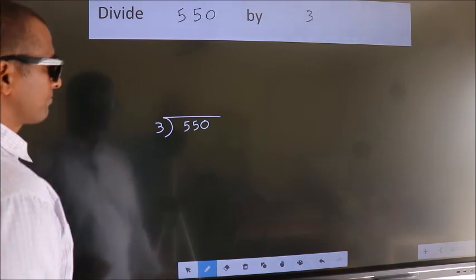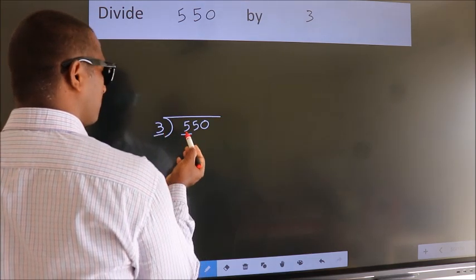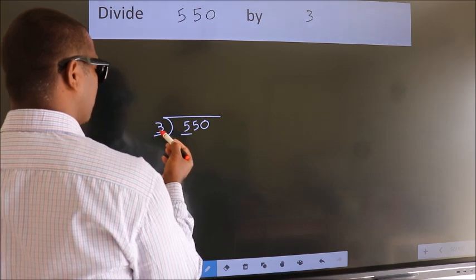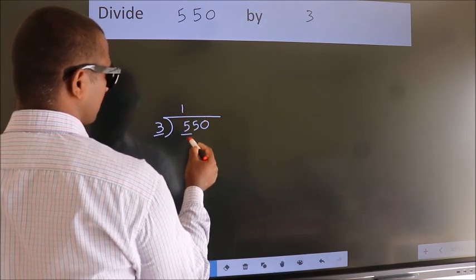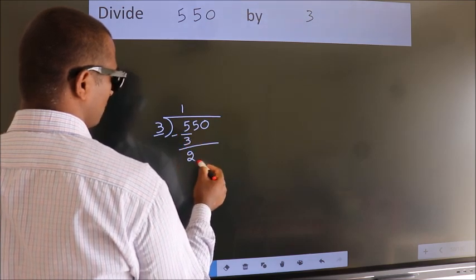Next, here we have 5, here 3. A number close to 5 in the 3 table is 3 times 1 equals 3. Now we should subtract. We get 2.